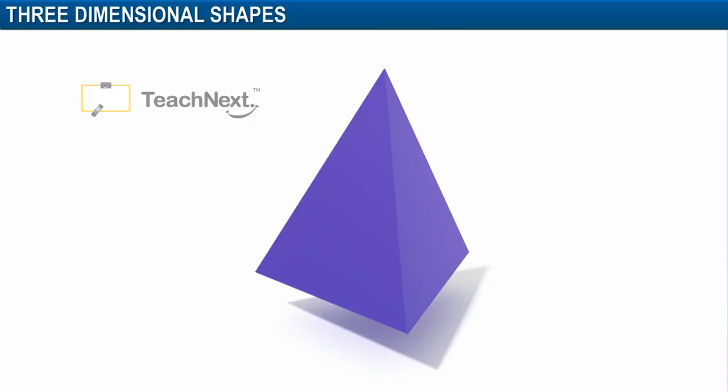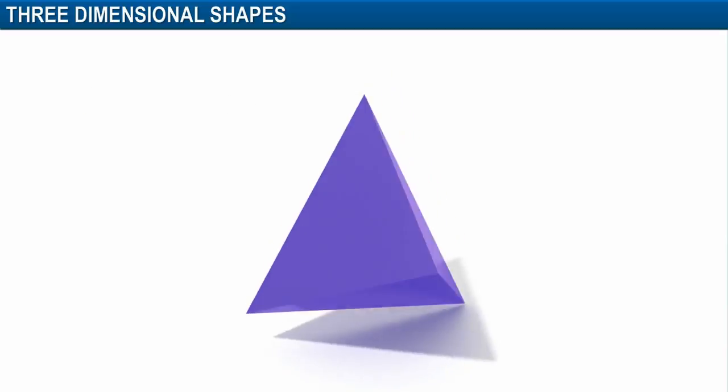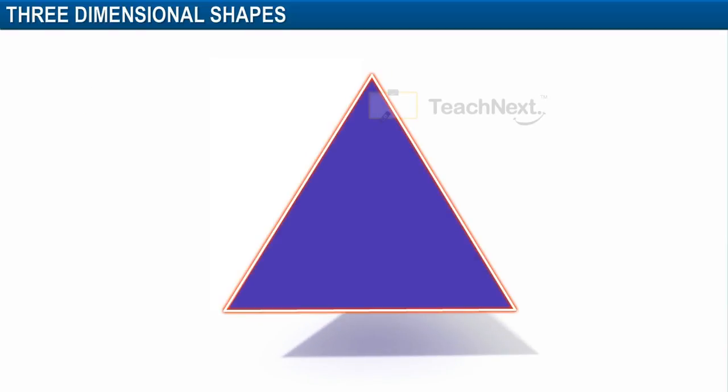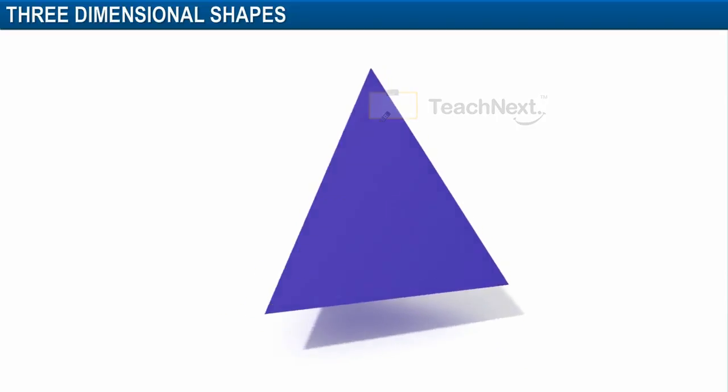On the other hand, a pyramid has only one base. The base can be of any polygonal shape. The other faces are triangular in shape.